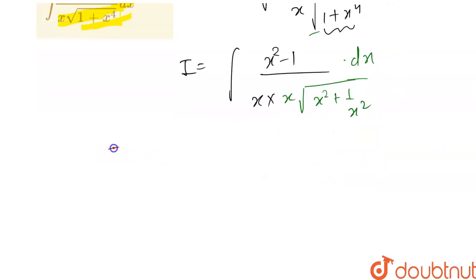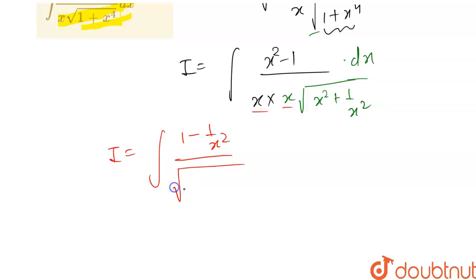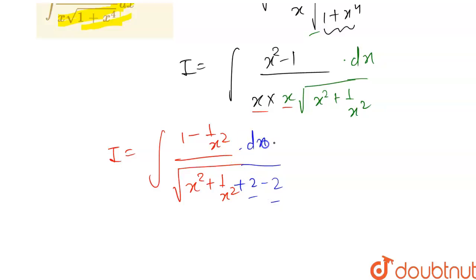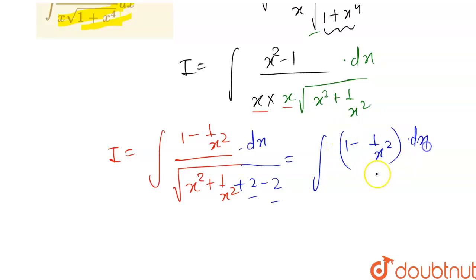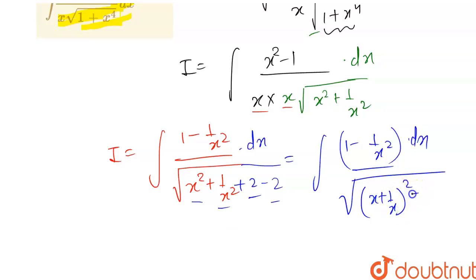Now I becomes equal to — let's divide x² in the numerator. Then we have (1 - 1/x²) divided by under root of (x² + 1/x²). Now in the denominator, let's add and subtract 2. So it becomes plus 2 minus 2, dx. So our I becomes ∫(1 - 1/x²) dx divided by under root of (x² + 1/x² + 2 - 2), which is under root of (x + 1/x)² - 2.